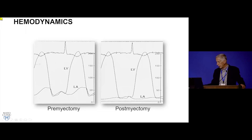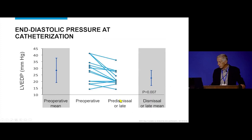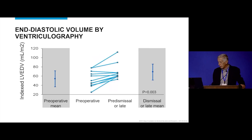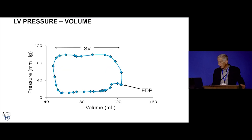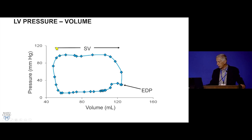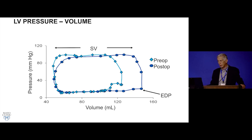When we first started doing the procedure, Dr. Nishimura did detailed hemodynamic studies. The tracings show the same ventricular pressure but lower left atrial pressure after surgery. In the composite data, there was a reduction in left ventricular end-diastolic pressure and augmentation of left ventricular end-diastolic volume. Pressure-volume curves confirm that the operation increases stroke volume and decreases end-diastolic pressure, demonstrating a clear physiologic basis for the procedure.